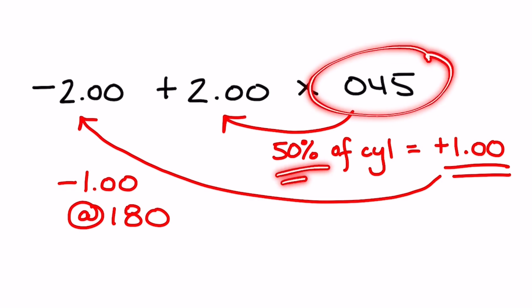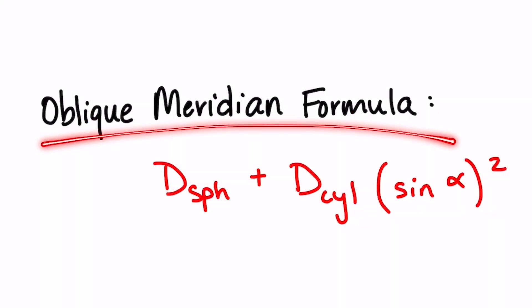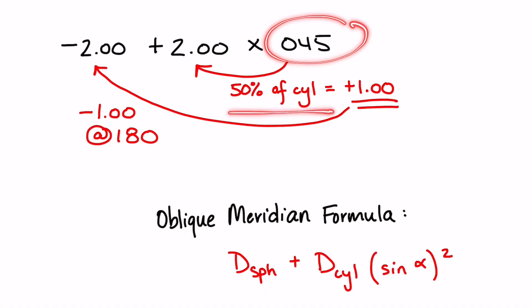You can use tricks you've learned about prescription powers and how to determine the power in a particular meridian, or you can use the oblique meridian formula to straight calculate it. But whichever method you use to find the power in the decentration meridian, just make sure it's the exact power. In the scope of what we're doing, we need to use the exact power of the lens in the decentration meridian.